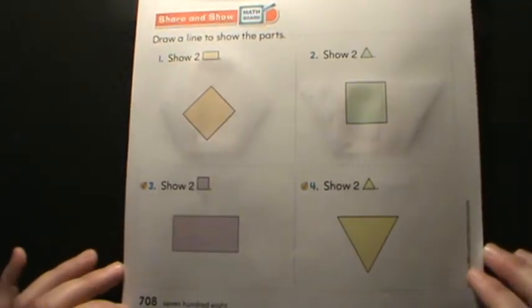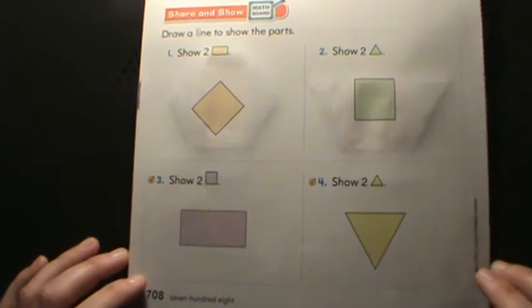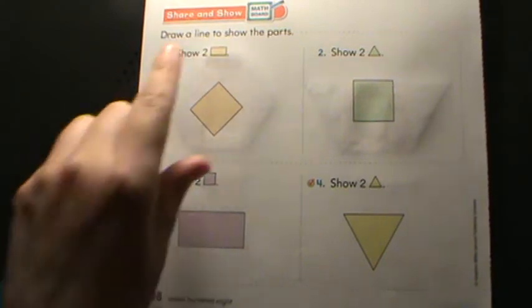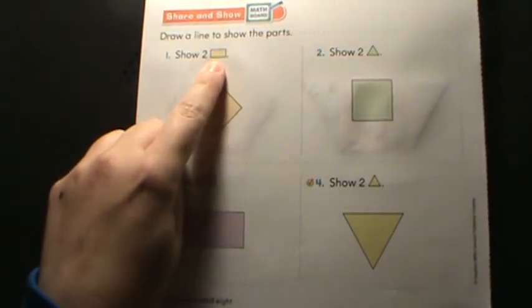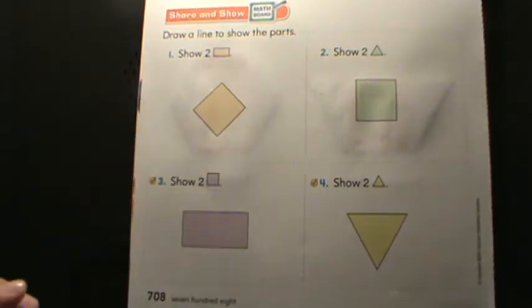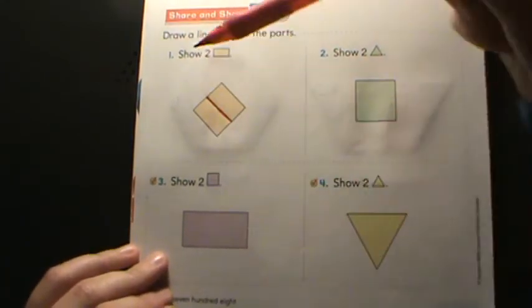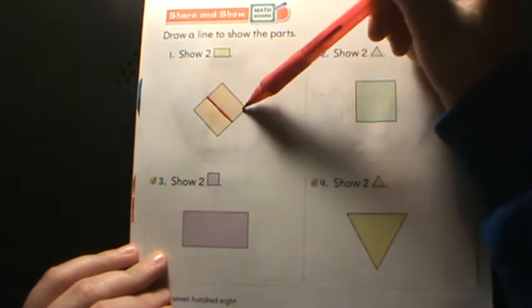Down here on Share and Show, it says draw a line to show the parts. We are wanting to show, for number one, two rectangles. So we need to draw a line here to show two different rectangles. I could draw that line here or I could draw it here, but I need to split that square in half. So I made two rectangles, right?